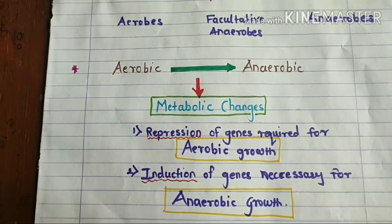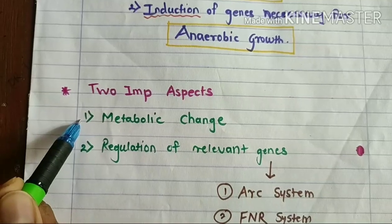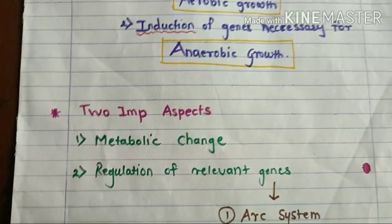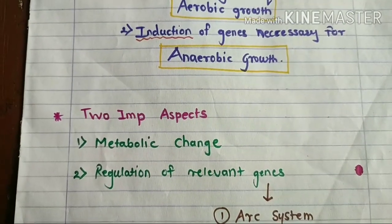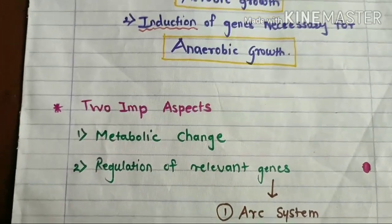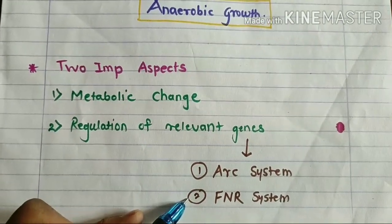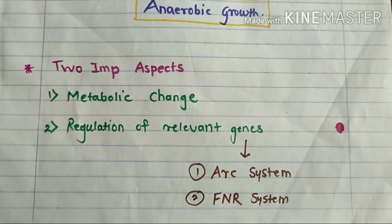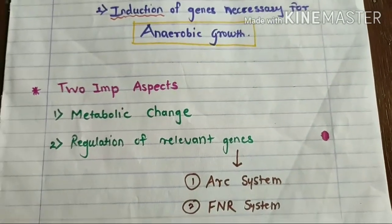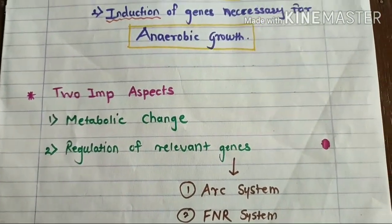There are two important aspects to these responses: first, metabolic change occurs, and then there is regulation of relevant genes. For a desired metabolic change in anaerobic condition, there must be regulation of the relevant genes. This regulation is carried out by two systems: the ARC system and the FNR system. Before discussing these systems, let's see what metabolic changes occur when a facultative anaerobe is shifted from aerobic to anaerobic condition.